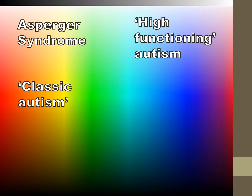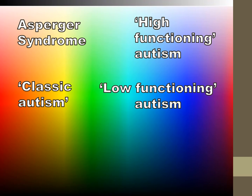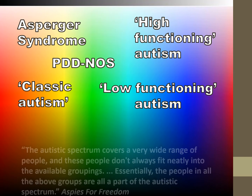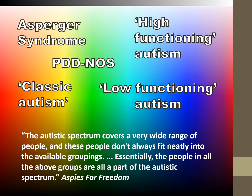You may well have heard terms such as Asperger syndrome, high-functioning autism, classic autism, low-functioning autism, and PDD-NOS — that's pervasive developmental disorder not otherwise specified. But as Aspies for Freedom puts it, the autistic spectrum covers a very wide range of people and these people don't always fit neatly into the available groupings. Essentially the people in all the above groups are all a part of the autistic spectrum.